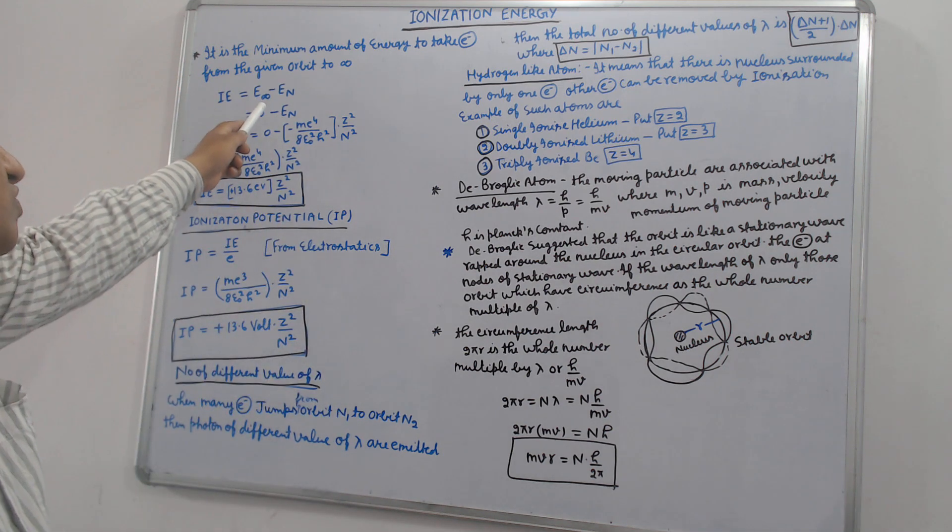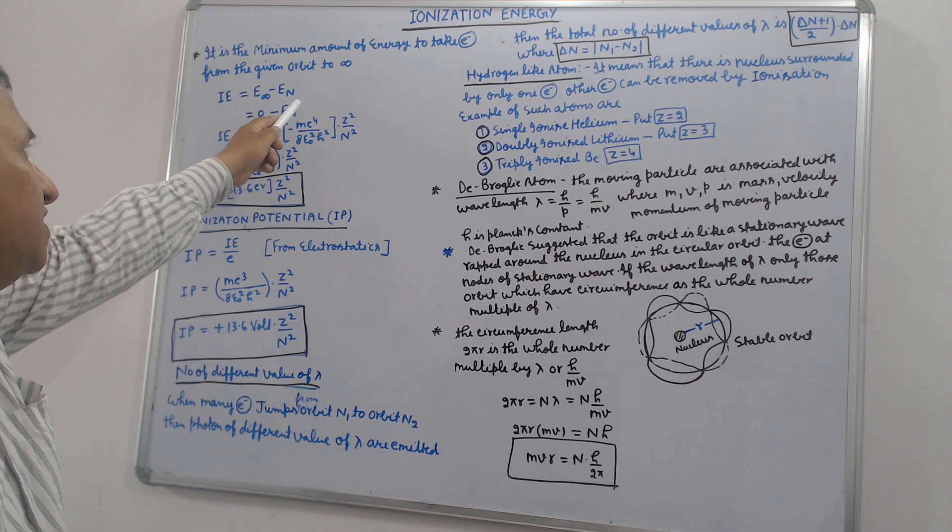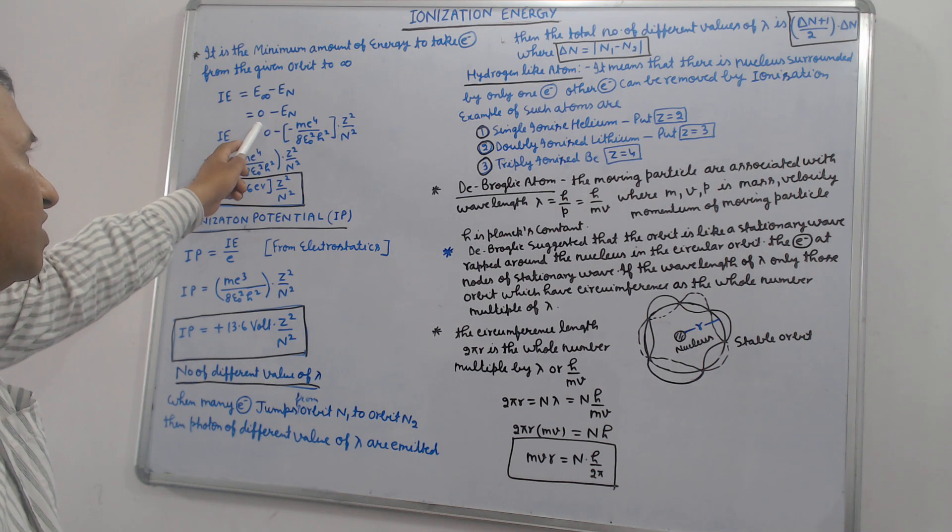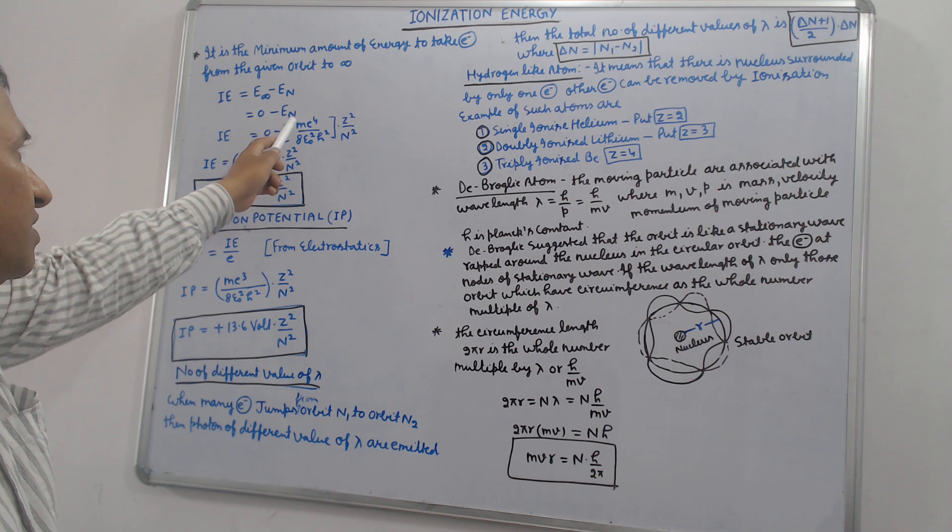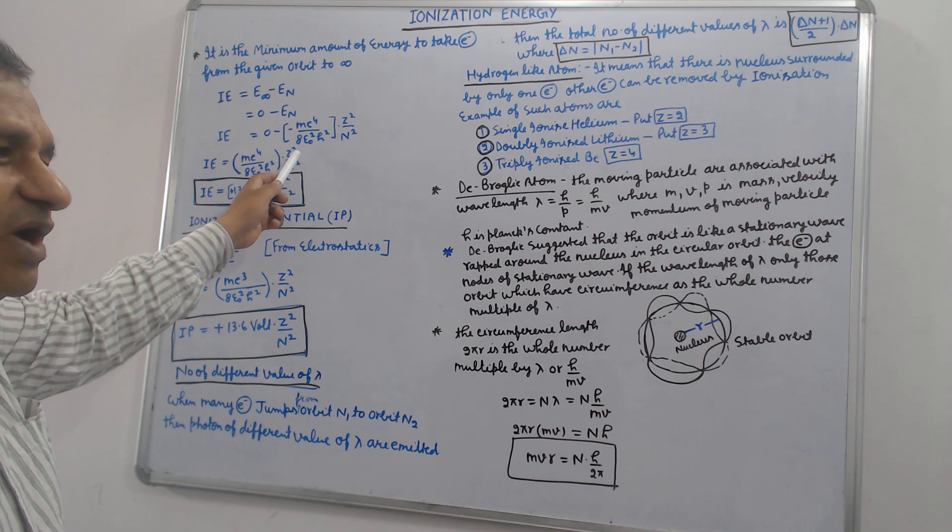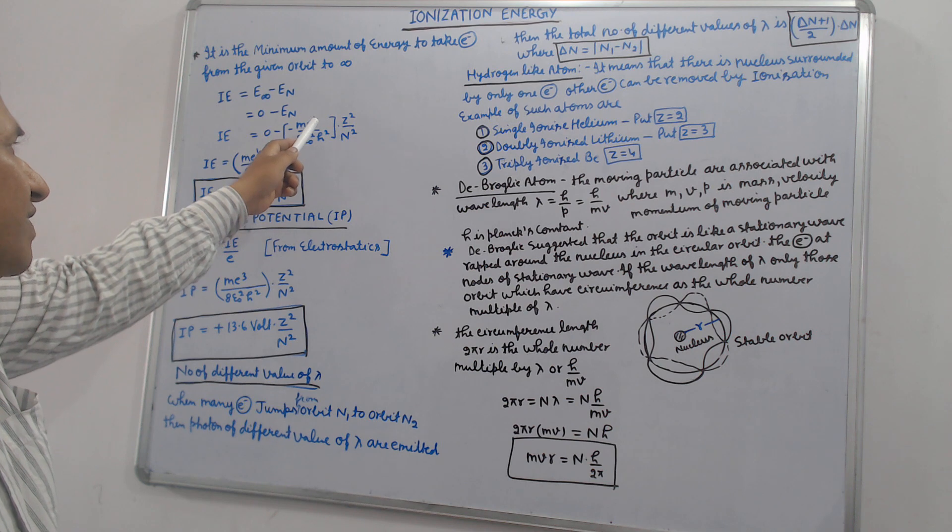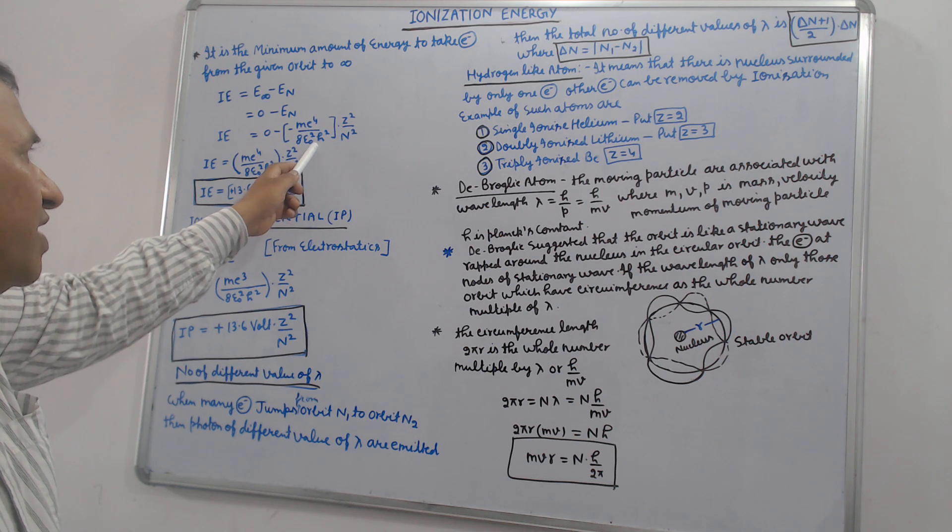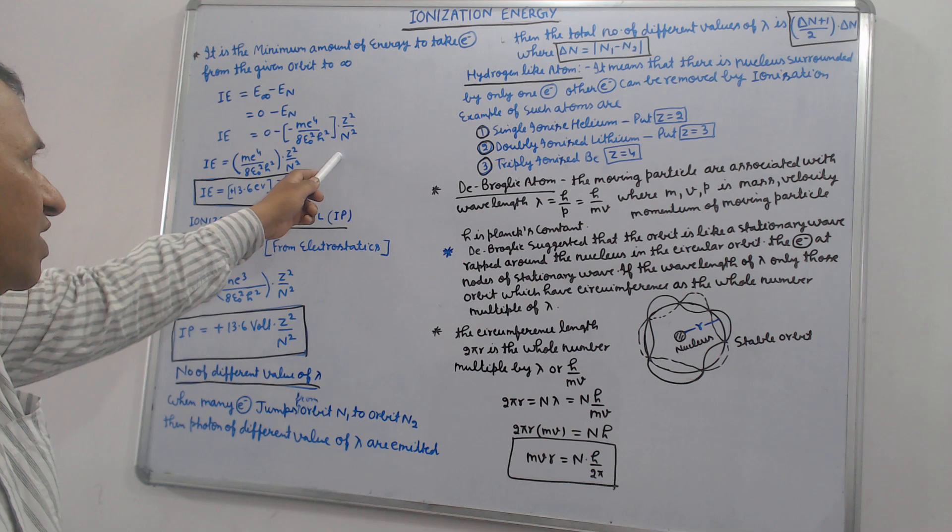Ionization energy equals E-infinite minus E-n. E-infinite equals zero minus E-n. Ionization energy of the n-th orbit equals zero minus Me⁴ upon 8ε₀² h² into Z² by N².